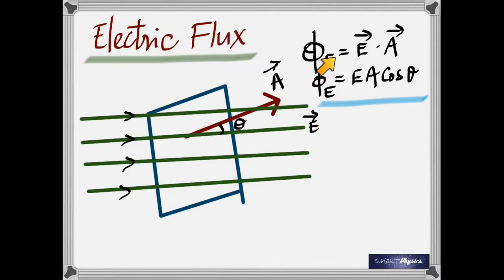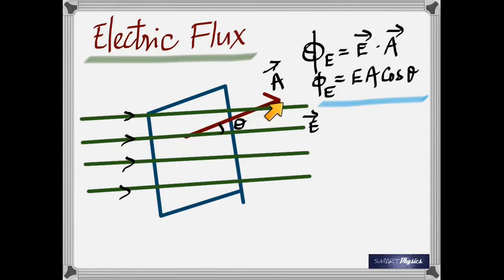The total electric flux passing through a surface is the dot product of E and A. What is E? Intensity — and is intensity a vector? Yes it is. And area here is also a vector. The direction of area is given by that arrow in the figure. When you take the dot product, A dot B equals AB cosθ. Therefore electric flux is given by Φ_E = EA cosθ.